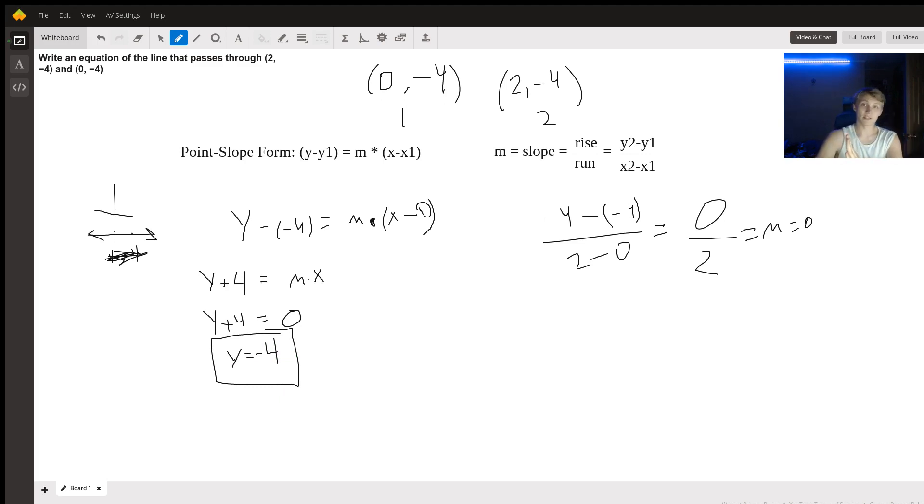All right, we have y all alone on one side, some amount of x on the other side, in this case it's 0, and some amount of constant on the right side, in this case it's negative 4. And there is your in-depth answer.